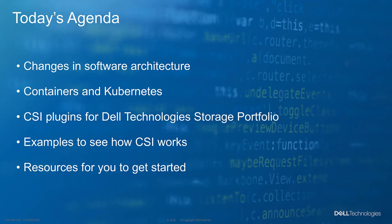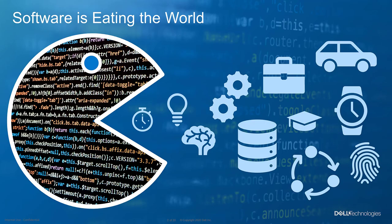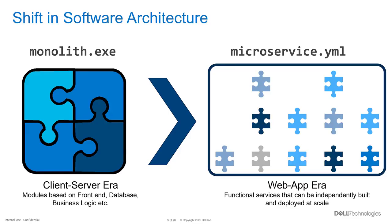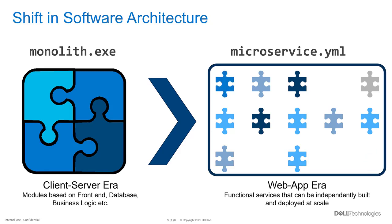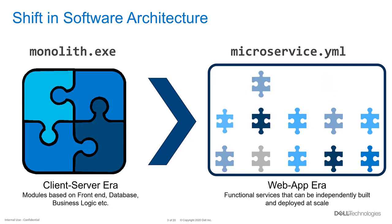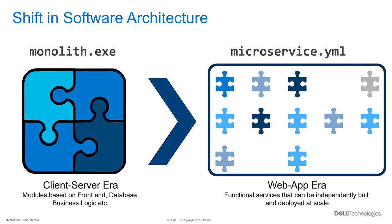You may have heard the phrase 'software is eating the world.' Software is every organization's business, irrespective of the industry or domain you operate in. The depth of technology integration determines the agility with which organizations can bring new products and services to market. Software architectures are going through a major change — large monolithic applications are being broken down into smaller pieces that are functionally independent and can be deployed and scaled independently.